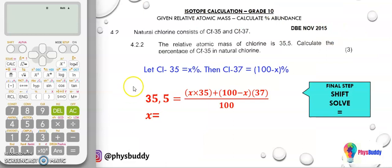So I'm using a question from the isotopes grade 10 where we are given the relative atomic mass and we need to calculate percentage abundance. In this case we are letting Cl-35 be x and Cl-37 will then be 100 minus x, and I've set up the equation as shown.